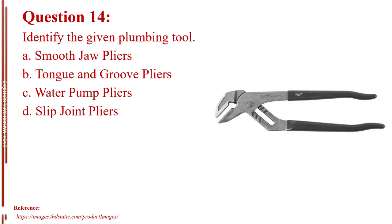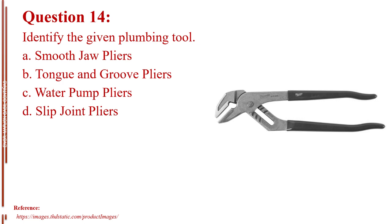Question number fourteen. Identify the given plumbing tool. Letter A, smooth jaw pliers. Letter B, tongue and groove pliers. Letter C, water pump pliers. Letter D, slip joint pliers. The answer is Letter A, smooth jaw pliers.